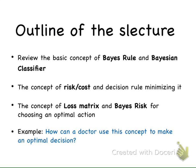Here's the outline of this lecture. We'll first review the basic concept of Bayesian rule and Bayesian classifiers, and then we'll introduce the concept of risk and derive the decision rule that can minimize this risk. Then we'll go on to introducing the concept of loss metrics, and we'll define the Bayes' risk for choosing an optimal action.